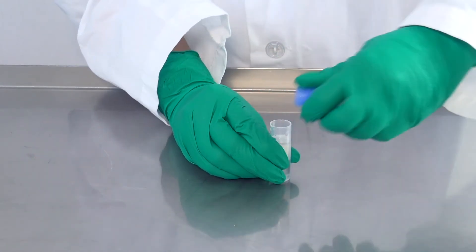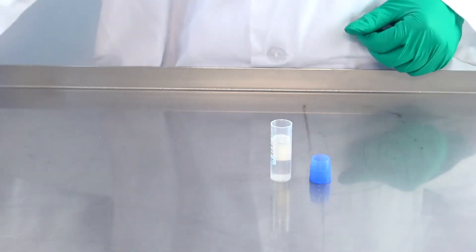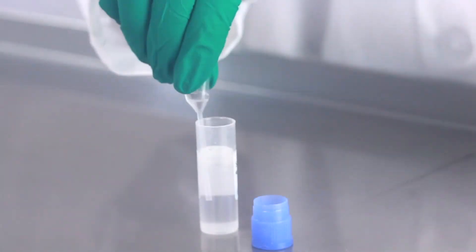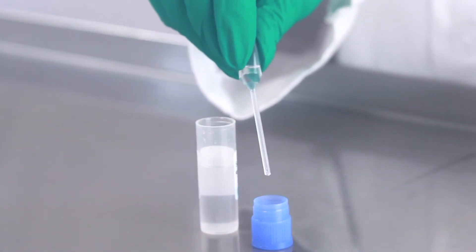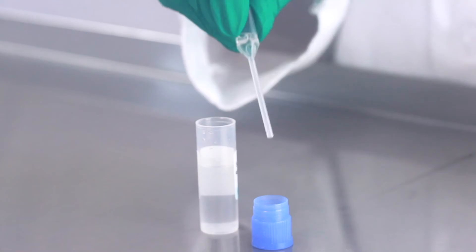Then open the dilution vial and place the blue cap upside down on a clean surface. Using a new disposable plastic pipette, add 10 drops from the dilution vial to the blue cap.